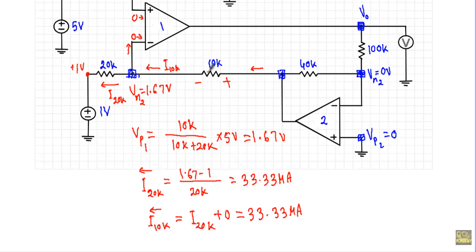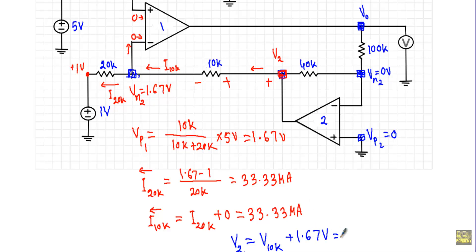Now I will calculate the output voltage of operational amplifier 2, denoted V2. V2 is the voltage from the output terminal to ground, which equals the voltage across the 10 kΩ resistor plus 1.67 volts. The voltage across the 10 kΩ resistor is: 10k × 33.33 µA = 33.33 × 10⁻⁶ × 10 × 10³. Adding 1.67 volts gives V2 equal to 2 volts.